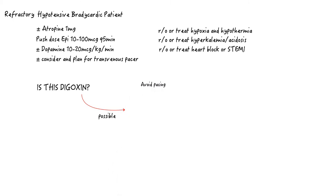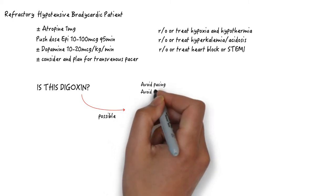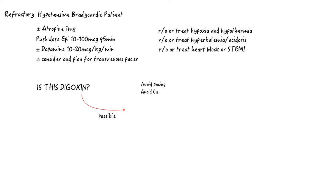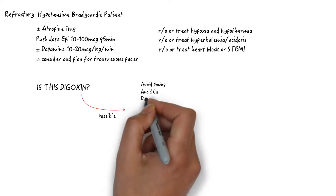So the next question to ask is, is this digoxin? Because you don't want to pace or use calcium if it is. Pacing an already hypercalcemic and irritable myocyte can precipitate more unstable rhythms. Giving calcium can theoretically worsen digoxin overdose by further increasing intracellular calcium.